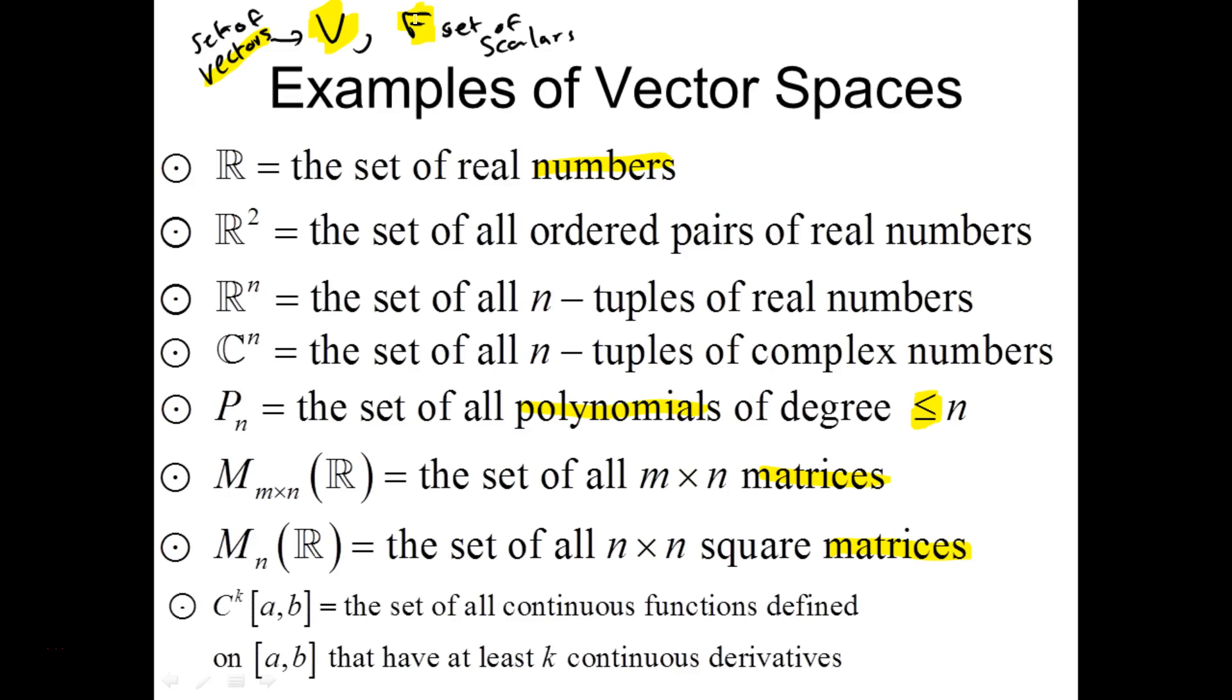And then one more, the set of continuous functions defined on a closed interval a, b. We're talking about single variable functions that are continuous, but even more than that, they have at least k continuous derivatives. So, the k that's up here, as in that sort of exponent type position, that'll stand for how many continuous derivatives we expect them to have. All these guys are vector spaces, and we'll take P2 and look at it in detail. Go through all ten axioms. In order to show something's a vector space, you have to show the axioms hold.